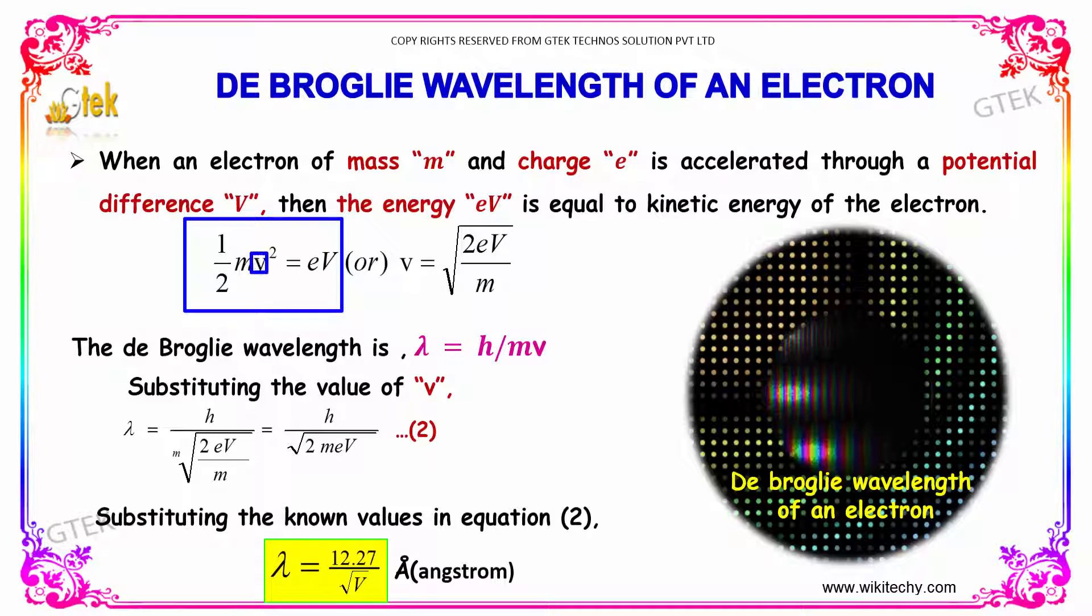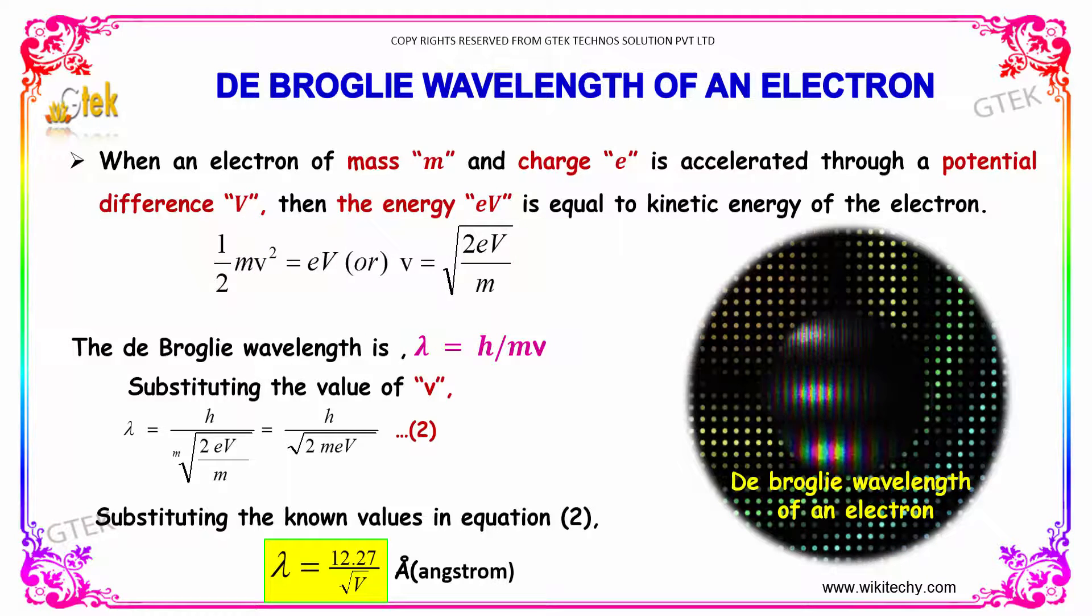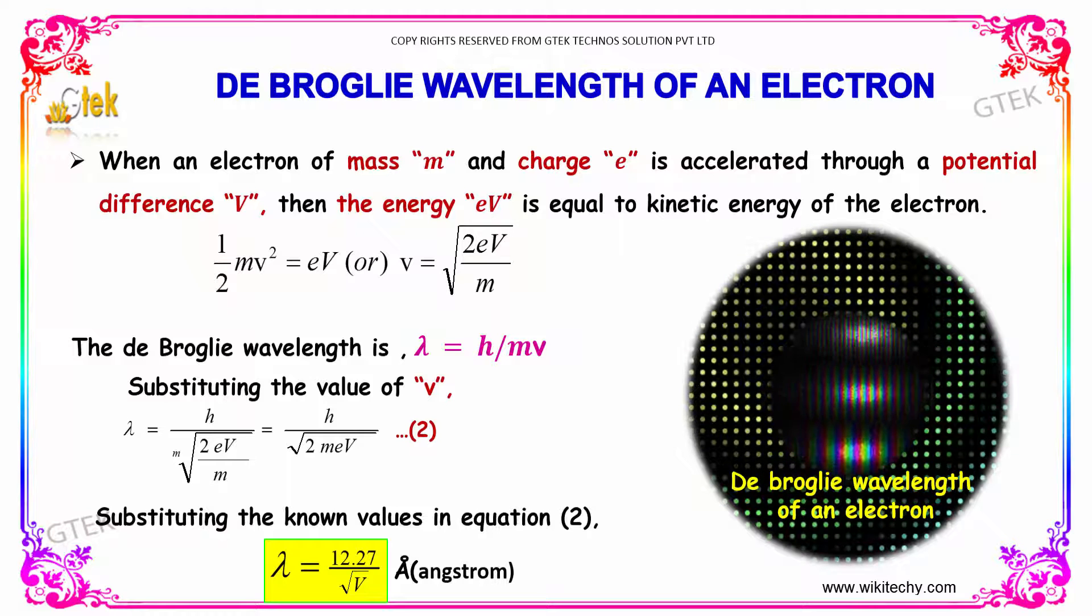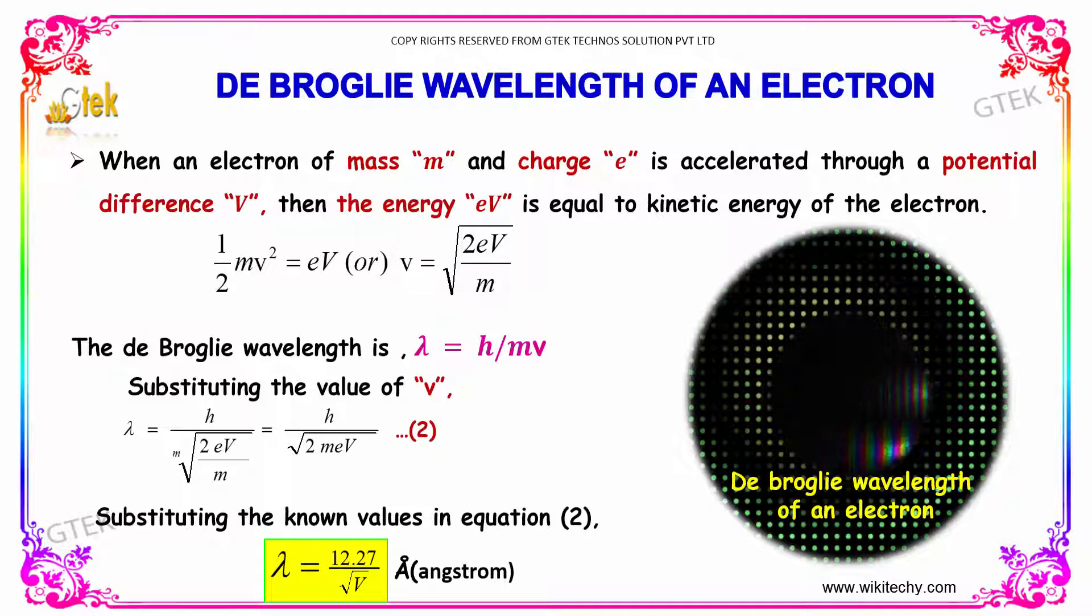The velocity is v = √(2eV/m). The de Broglie wavelength is λ = h/mv. Substituting the value of v, λ = h/(m·v) = h/√(2meV).